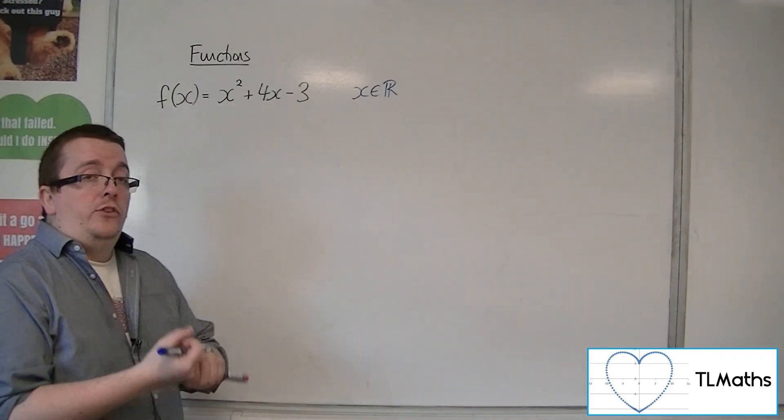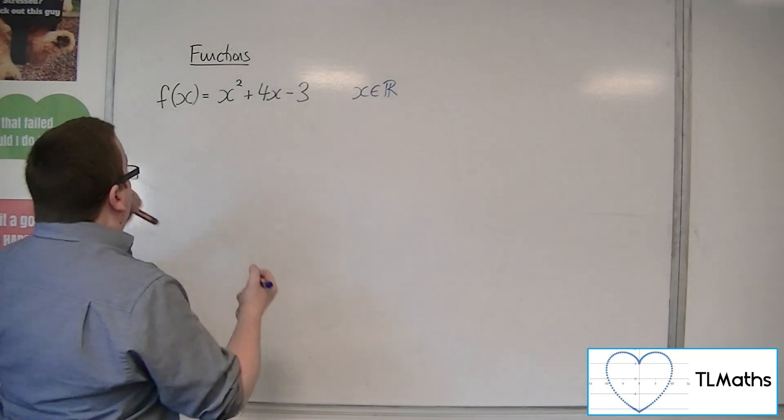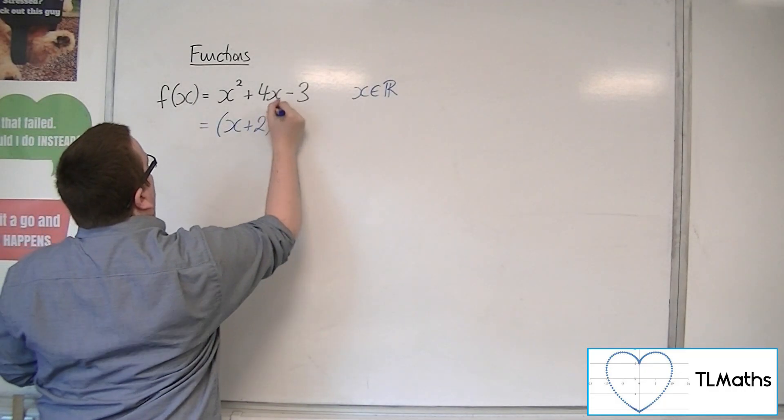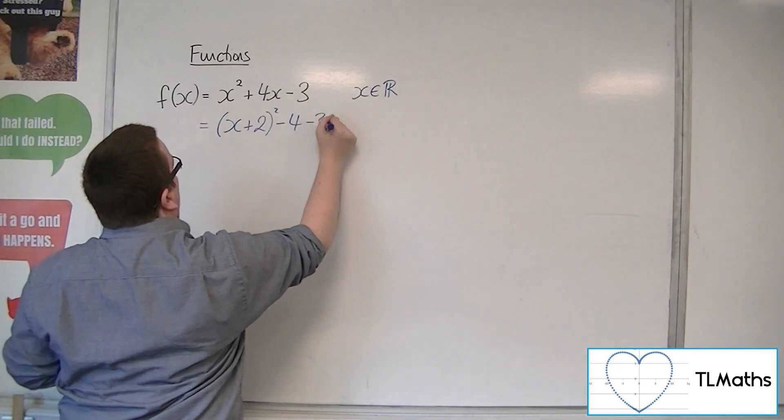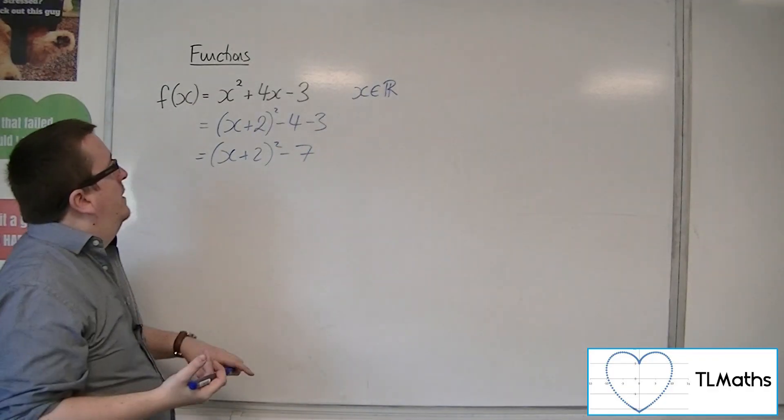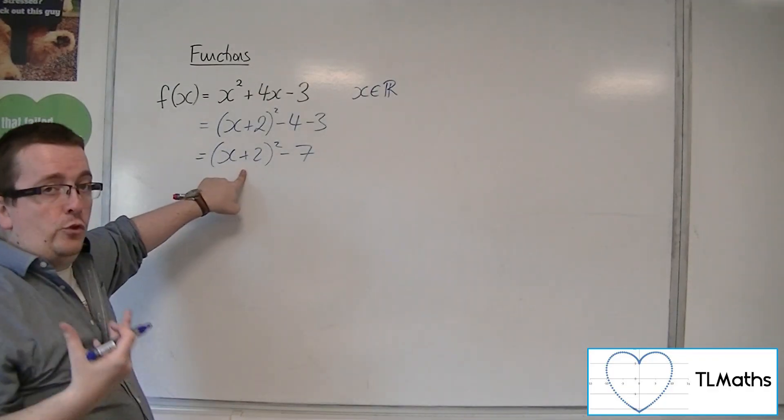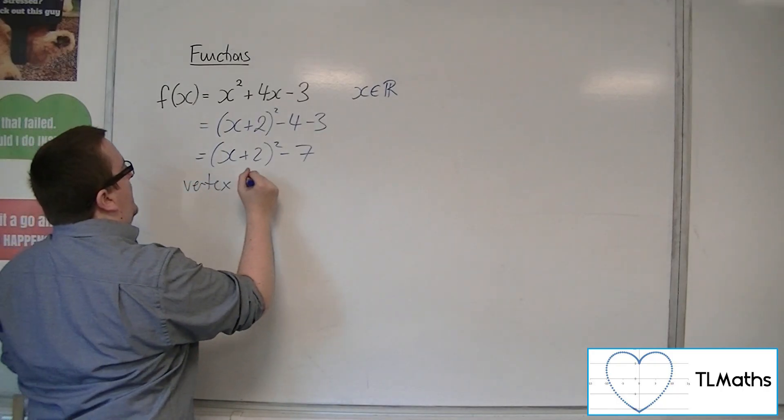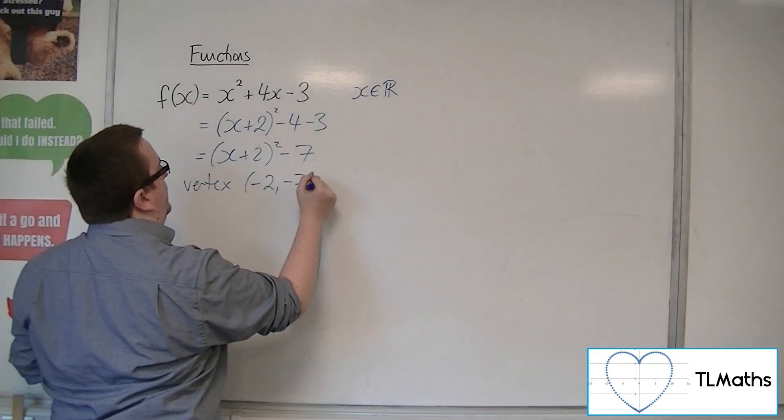So I'm going to use completing the square to do this. We would write it as (x+2)² - 4 - 3. So that's its completed square form. Its vertex is at (-2, -7).